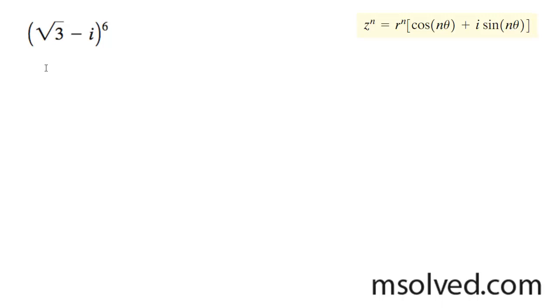We want to put this into standard a plus bi form. We need to find r first and that's going to be equal to square root of 3 squared plus 1 squared. Even though it's i, we end up with root 4 and we get 2 out.